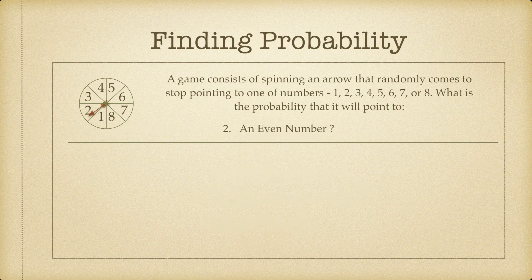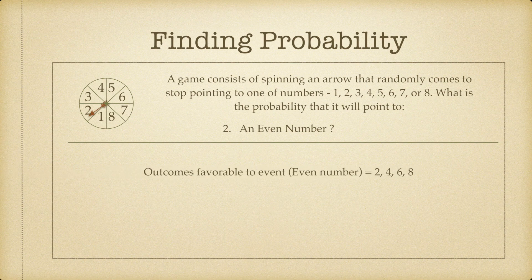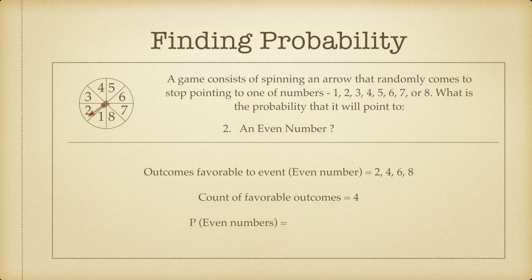Now let's take a look at the second question with the same setup: what is the probability that the arrow will point to an even number? Our event has changed — now it's the arrow pointing to an even number. The outcomes favorable to our event are the even numbers: 2, 4, 6, and 8. The count of favorable outcomes is 4, so the probability is 4 divided by 8, or 1 divided by 2.